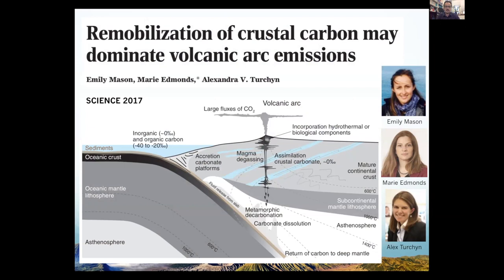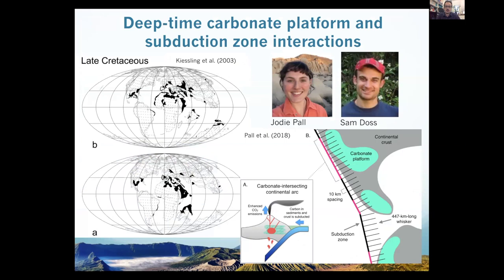Many of you would be aware of the wonderful work from the Deep Carbon Observatory led by Emily Mason, Marie Edmonds, and Alexandra Turchin on how buried limestones and carbonates are remobilized — with CO2 remobilized through volcanic emissions at subduction zones. We looked at this in a deep time context with Jody Powell and Sam Doss. We took mapped carbonate platforms in geological time and wanted to see, through geological time, to what extent this outgassing may have been driving atmospheric CO2 over the last 400 million years.